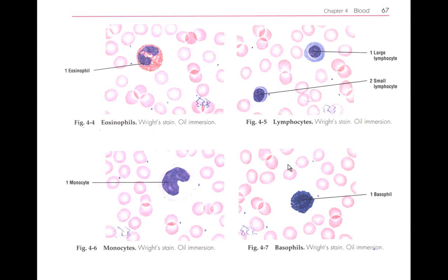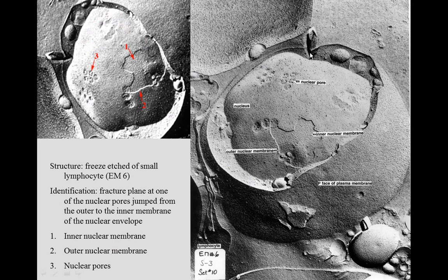In blood, we see a host of different shapes of cells. The eosinophil has a lobulated nucleus. But today we'll be looking at lymphocytes, which has a spherical nucleus. It's mostly quiescent until it becomes activated. This is a carbon replica transmission electron micrograph of a lymphocyte, showing you the cytoplasm and the two different leaflets of the nuclear envelope, and here we can see nuclear pores.